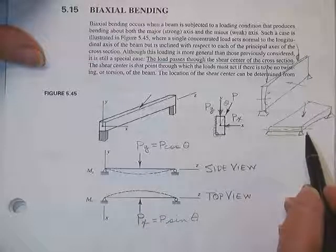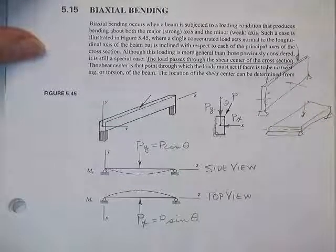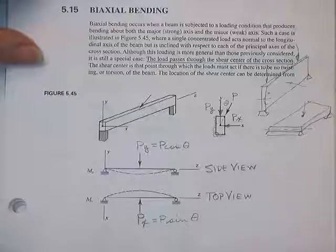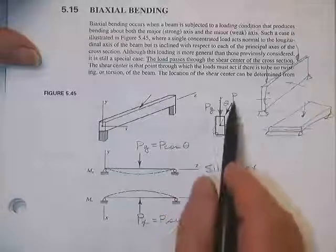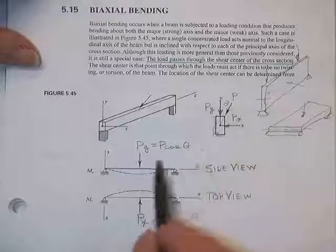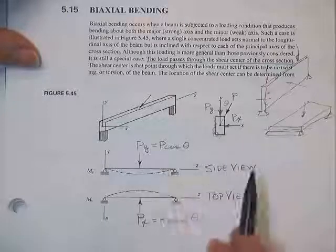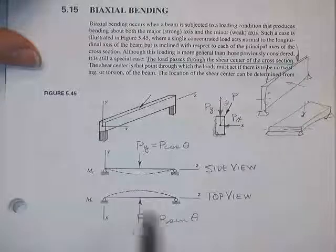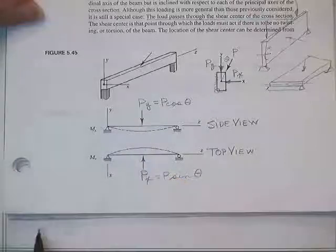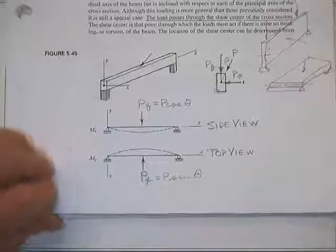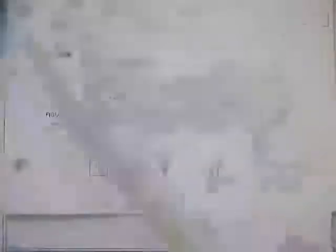Number one: weak axis bending cannot laterally torsionally buckle — mark that off the list. If you have the load at an angle rather than given as two separate loads, take the load and the angle: put a vertical force P cosine theta and a horizontal force P sine theta. This tends to bend the beam in two directions as opposed to just straight up and down.